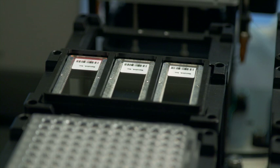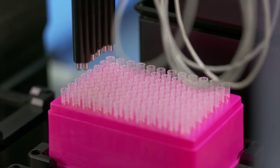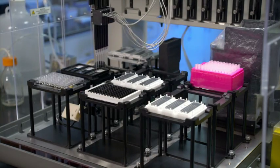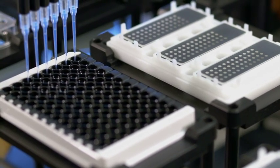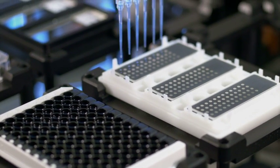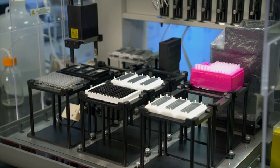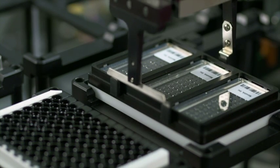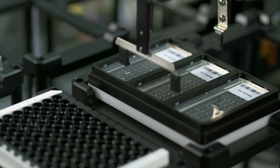The NanoInk assay begins with blocking the capture antibody nanoarray slide. Next, two to four microliters of standards and samples are added to reaction wells on the sample slide. The blocked nanoarray slide is lowered onto the sample slide, bringing capture antibody into contact with sample antigen.